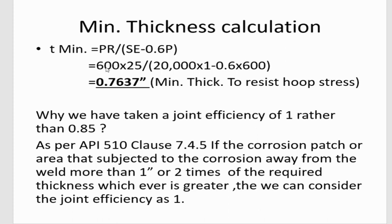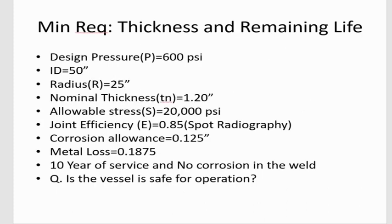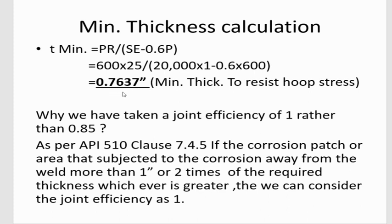In our case, the design pressure is 600 psi, radius is 25 inches, allowable stress is 20,000 psi, and joint efficiency is 1. Putting these variables into the equation, we get a minimum thickness equal to 0.7637 inches. This is the minimum thickness required to resist the hoop stress.